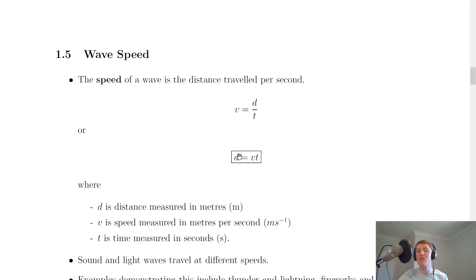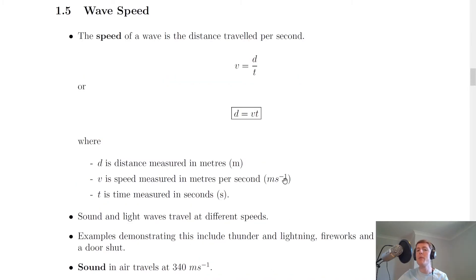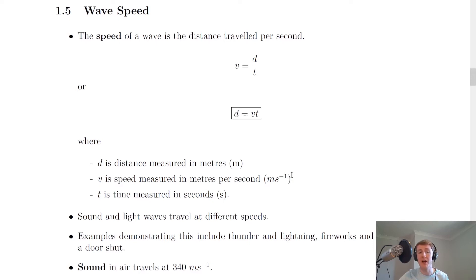D is the distance travelled by the wave in meters, V is the speed of the wave in meters per second, and T is the time measured in seconds. When writing meters per second, you can write it as m·s⁻¹ or as m/s — it's totally up to you which one you prefer.